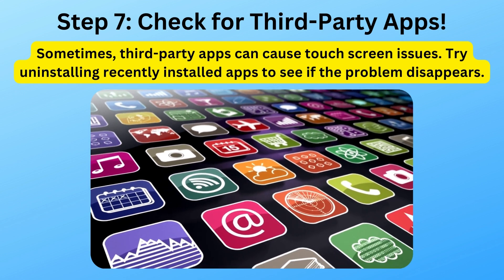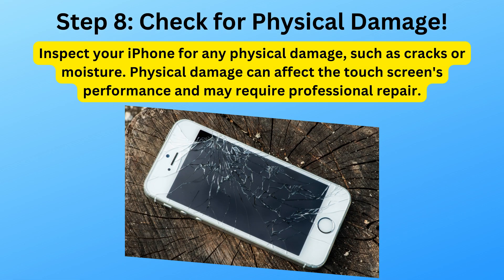Step 8: Check for physical damage. Inspect your iPhone for any physical damage such as cracks or moisture. Physical damage can affect the touch screen's performance and may require a professional repair.